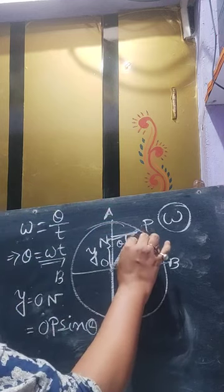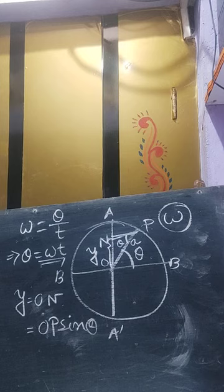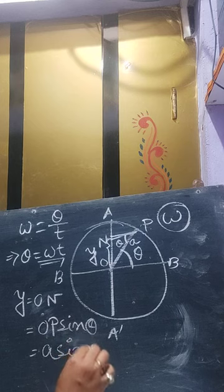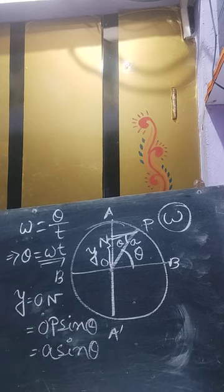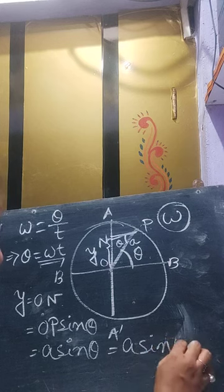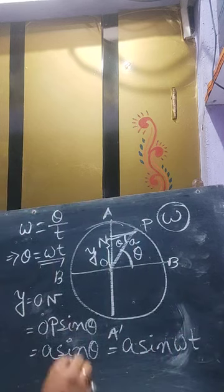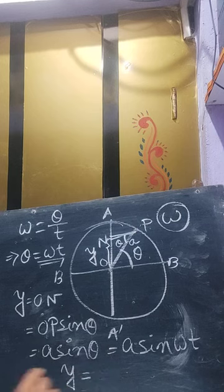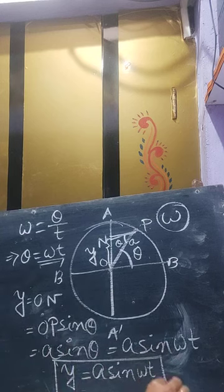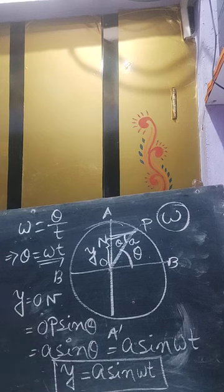OP is the radius of the circle. Let us consider it as A. So y becomes A sin theta. Since theta equals omega t, the equation becomes y equals A sin omega t. This is called the displacement equation of simple harmonic motion.